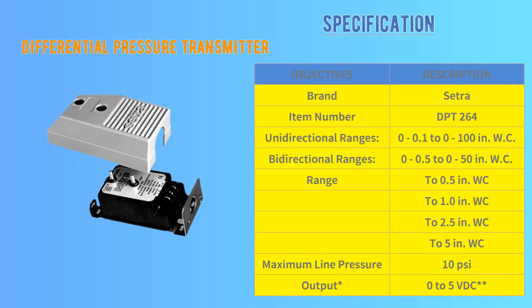Sixth, differential pressure transmitter, also called DPT. This is a product of CETRA. The only difference between DPS and DPT is that DPT gives an analog signal and DPS gives a binary signal.